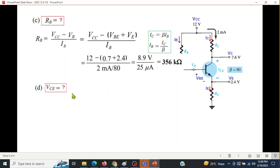Next is VCE. This is simple. VC is given, VE is given, so VC minus VE is VCE. And finally VB, we have already known that VB is VBE plus VE. Both the values are given, so VB is 3.1 volt.